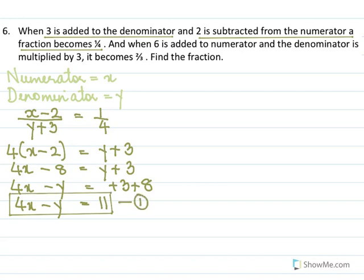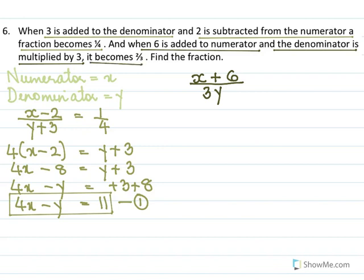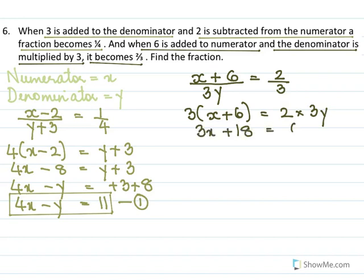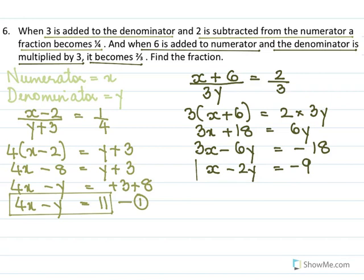In the next part, 6 is added to the numerator and the denominator is multiplied by 3, giving 2 by 3. So (x plus 6) over 3y equal to 2 by 3. Cross multiplying: 3(x plus 6) equal to 2(3y), giving 3x plus 18 equal to 6y. Simplifying: x minus 2y equal to minus 6. This is equation 2.